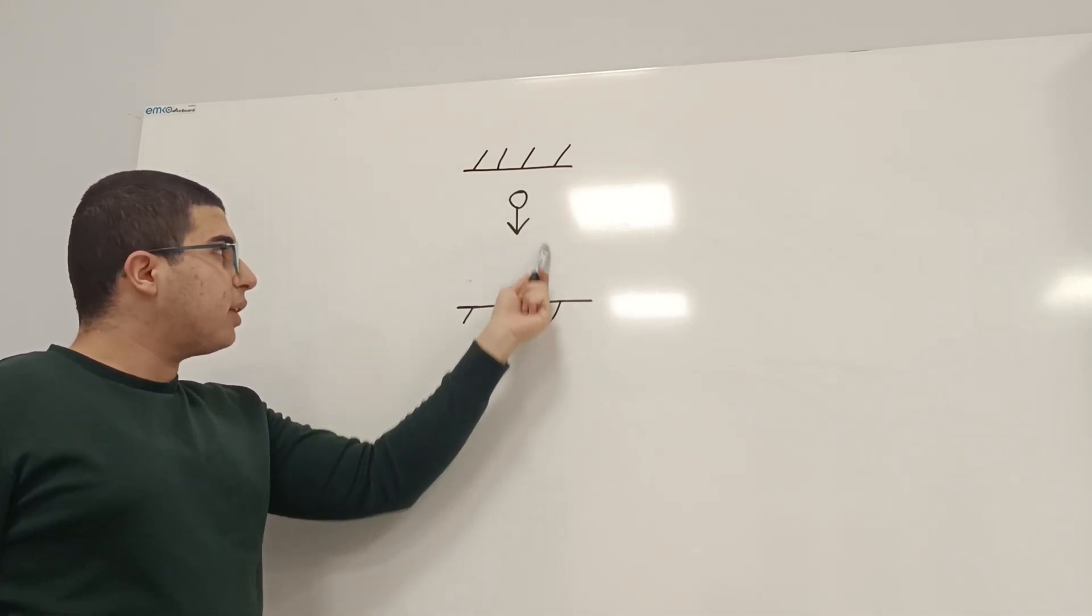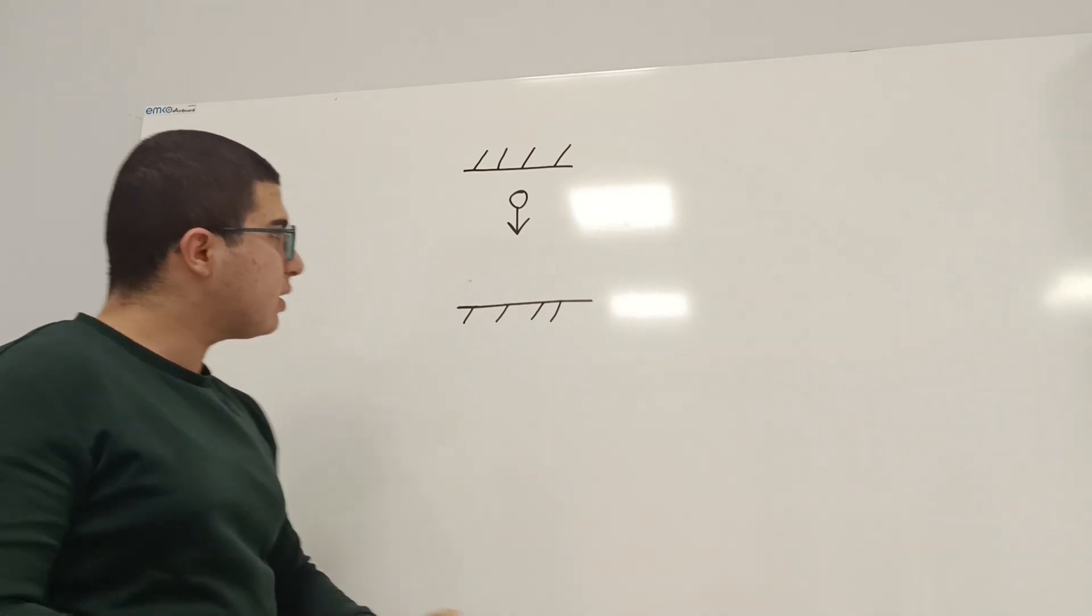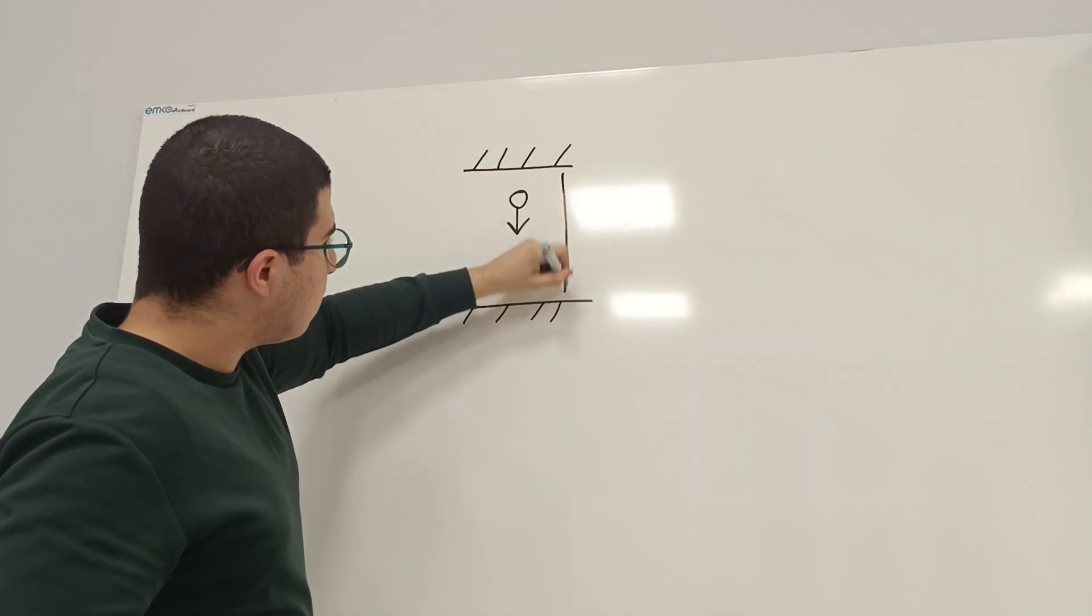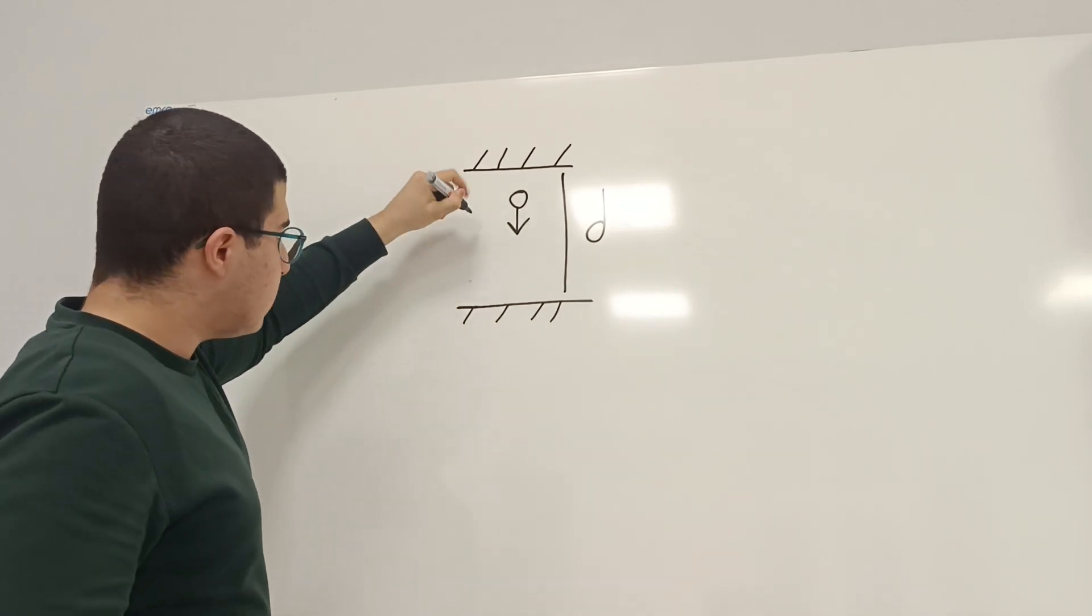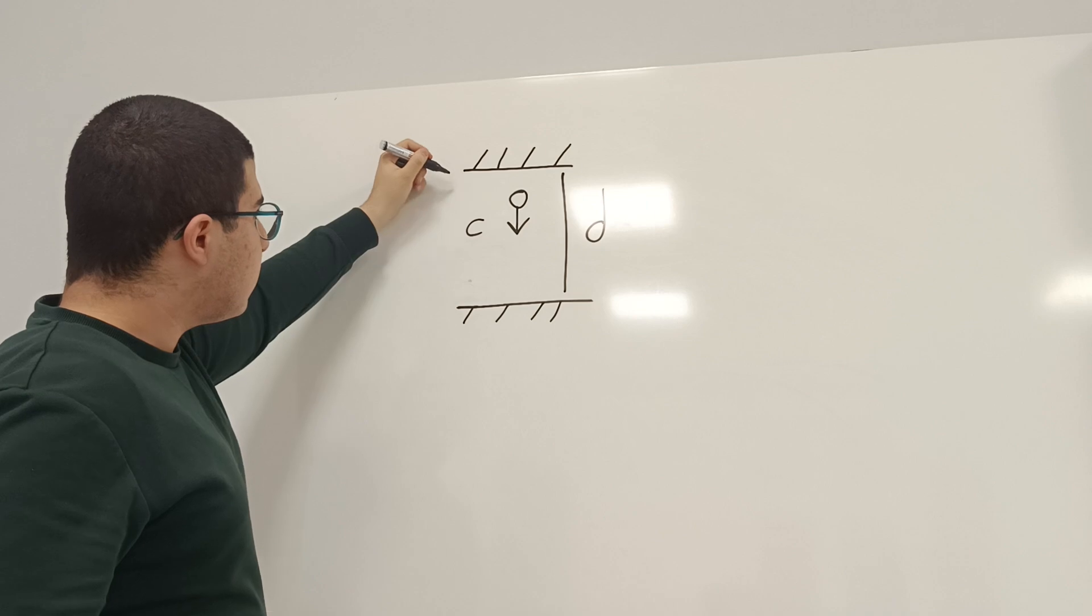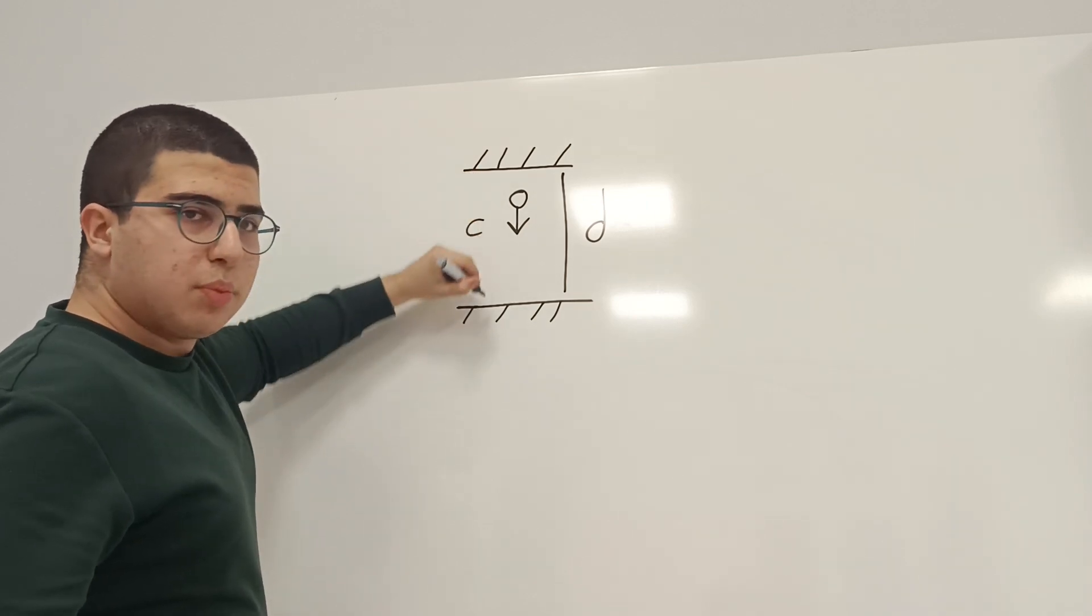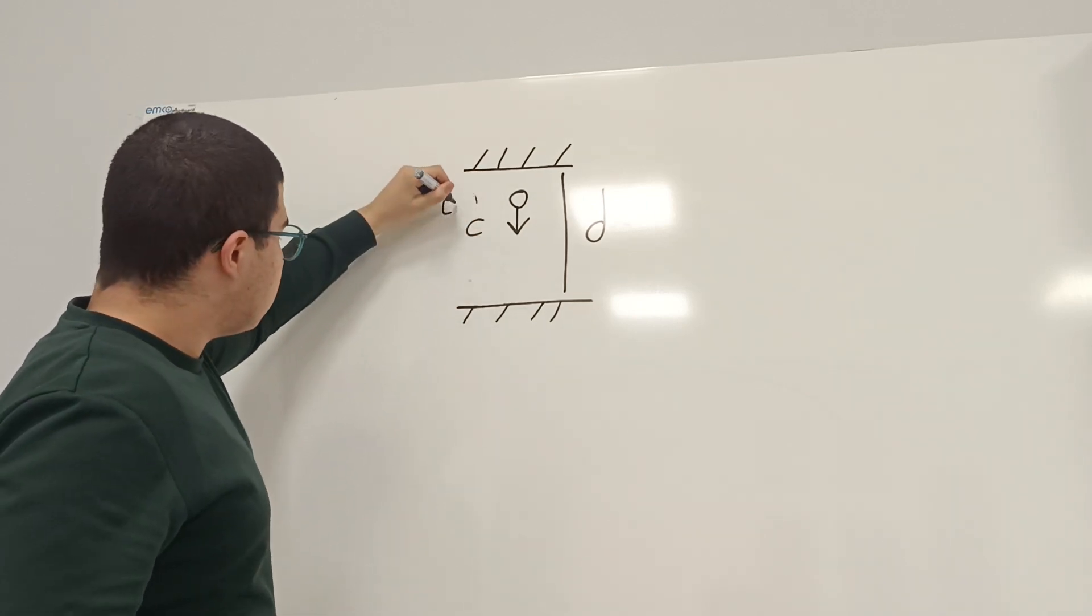This photon is getting reflected by these two mirrors, and let's call this distance d, and the speed of this photon c, the speed of light, and the time it takes to bounce between these two mirrors, t.